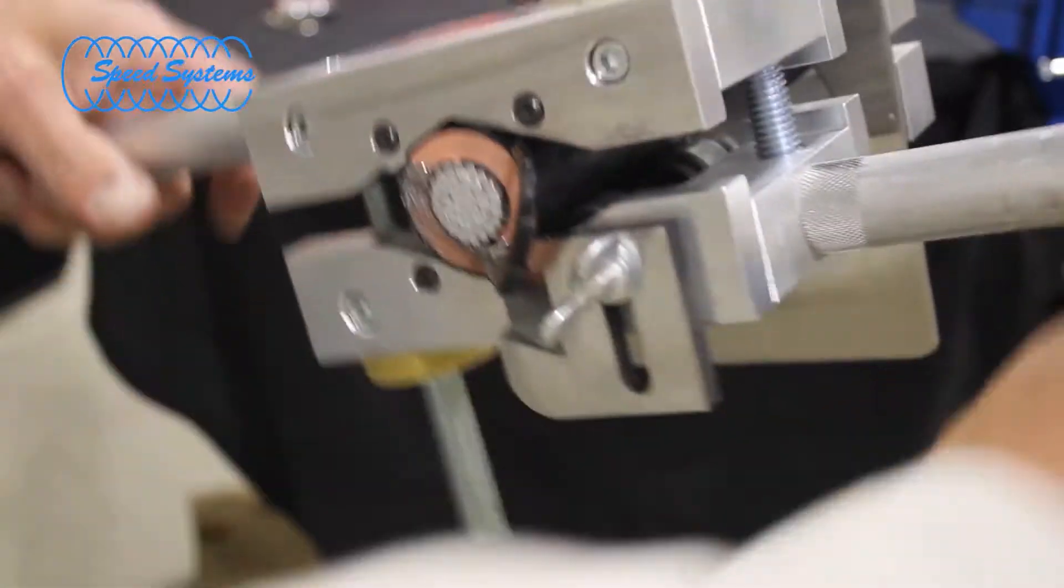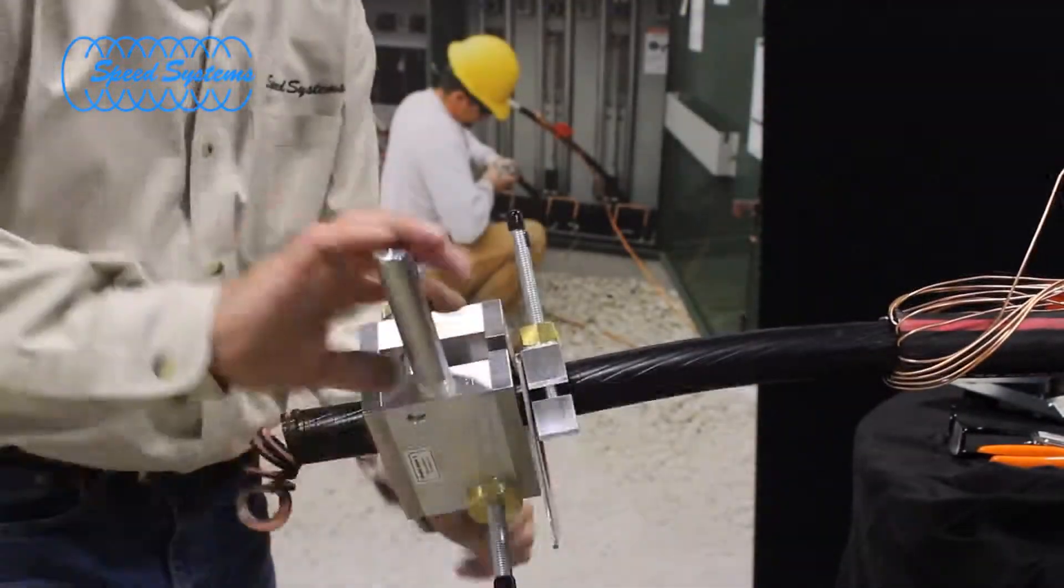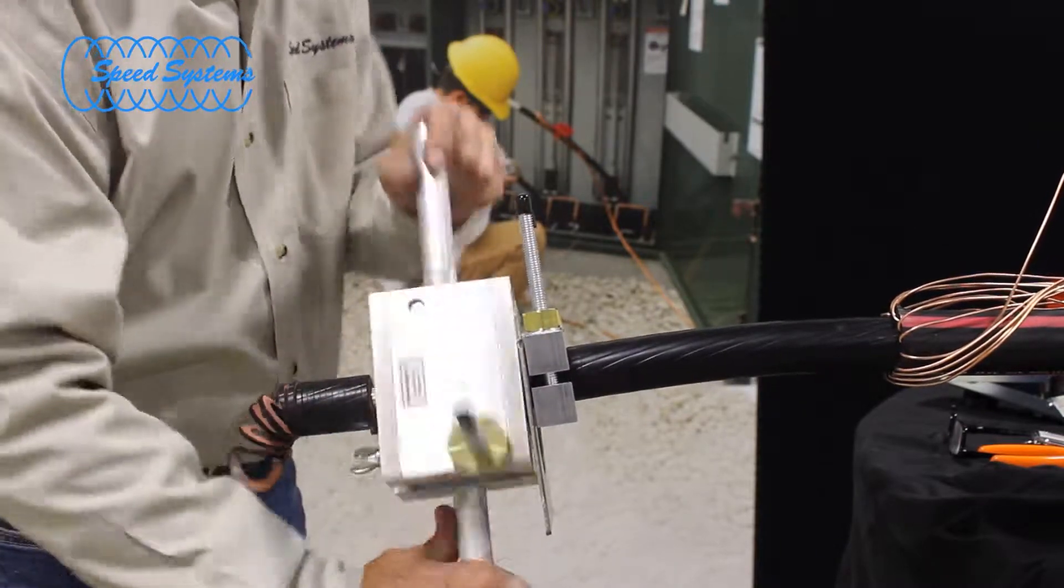Rotate the tool around the cable to begin stripping the insulation. The angled guide rollers draw the tool into the cable as you rotate it around the cable. The tool will stop and square off the cut when it contacts the tool stop.